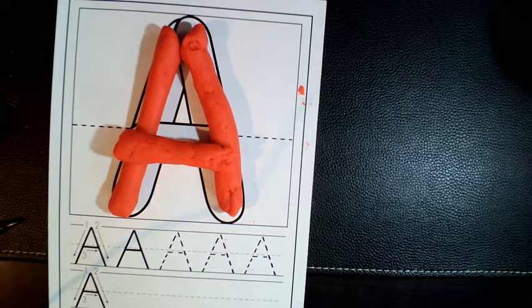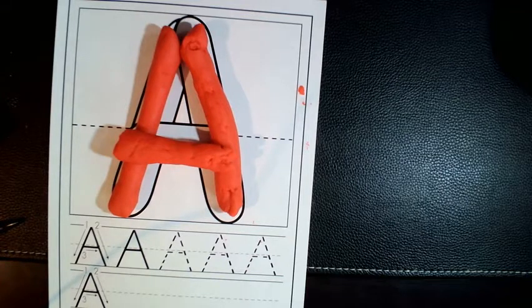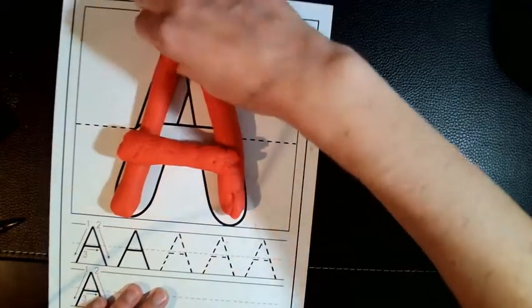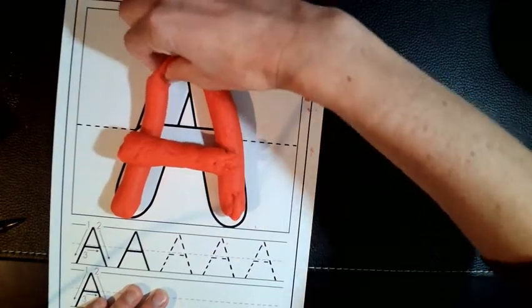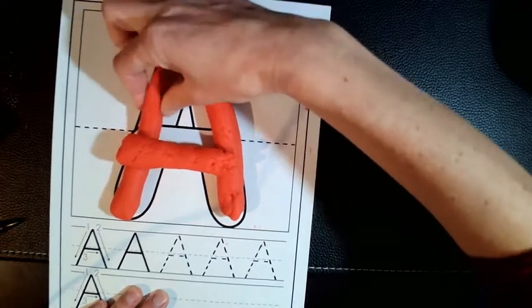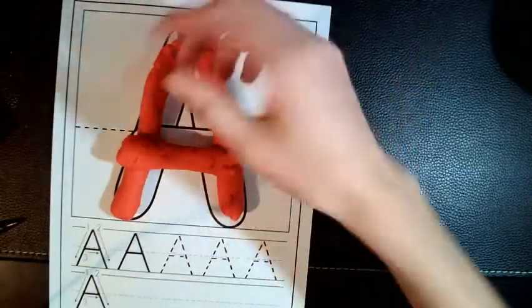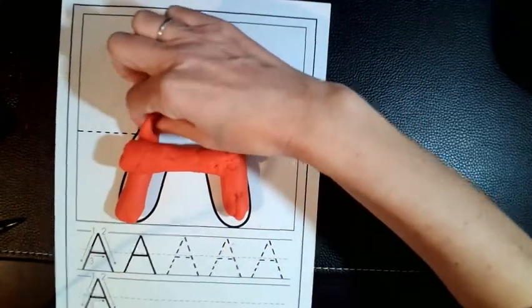To help with additional fine motor skills and building those muscles, we can pinch the letters on the side. So what we're looking for here is pinching with our finger and our thumb. And that builds all of the little muscles in our hand that help with our pencil grasp.